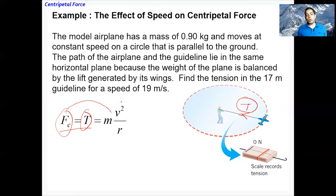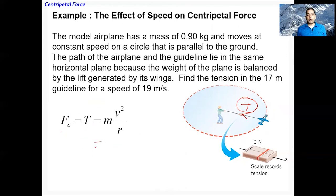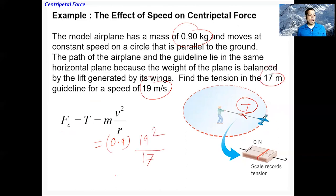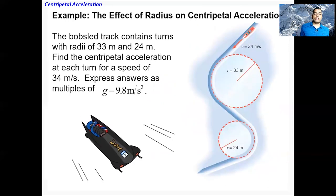Centripetal force equals tension, and centripetal force = mv²/r. So tension = mv²/r = (0.9 × 19²) / 17 = 19 newtons. So 19 newtons is the tension in the 17-meter guideline for a speed of 19 meters per second.